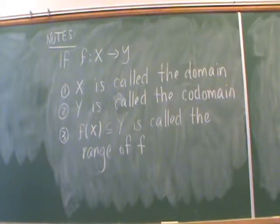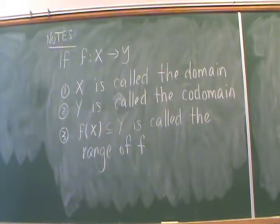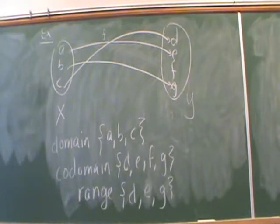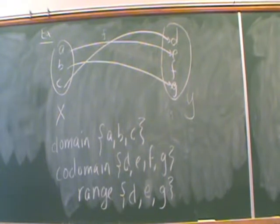Here's some terminology you're probably already familiar with. If we have a map from set X to set Y, then the entire set X is called the domain, and the entire set Y is called the codomain. If we map every element from X over to Y and think of that as a subset of Y, that subset is called the range of our map F. In our example, the domain is {A, B, C}, the codomain is {D, E, F, G}, and the range is {D, E, G} — only those elements in Y that get mapped from elements in X.